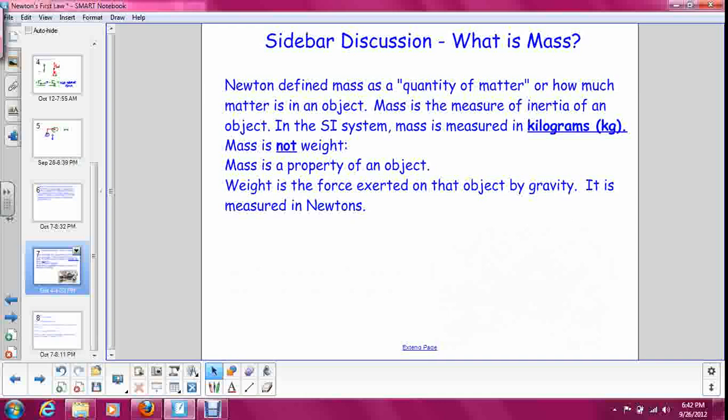A little discussion to have on the side here is what is mass? It's kind of tricky because we tend to think of mass and weight as being the same thing, but they are not. So Newton defined mass as a quantity of matter, or how much matter is in an object. Mass is the measure of inertia of an object.